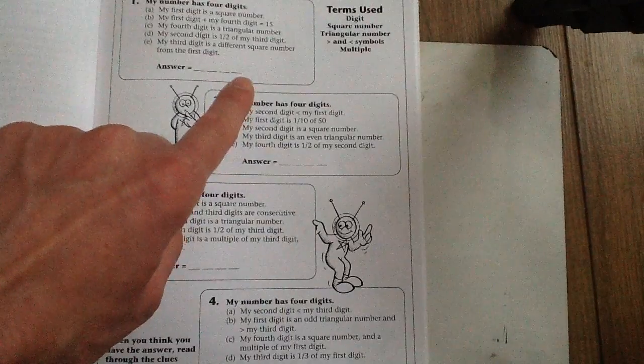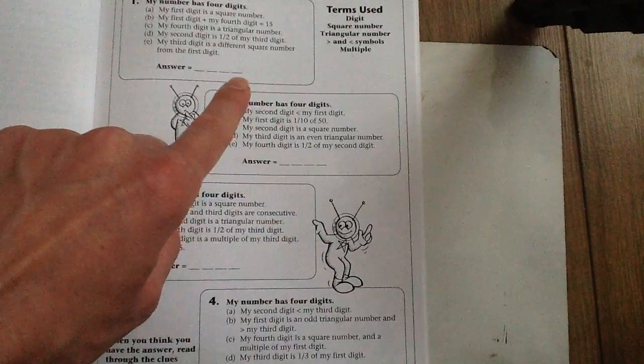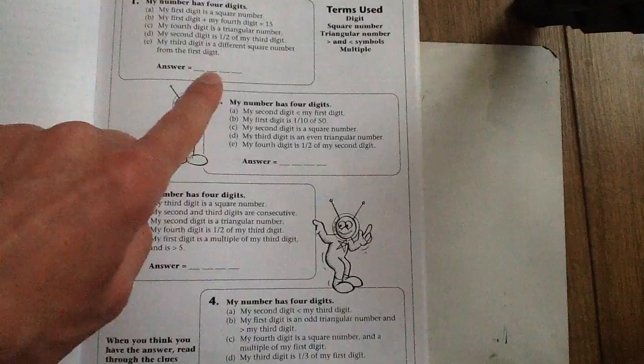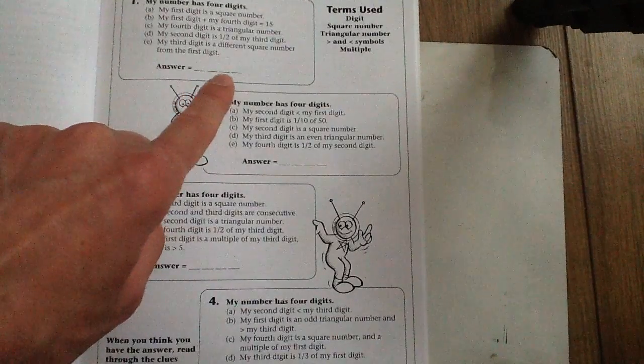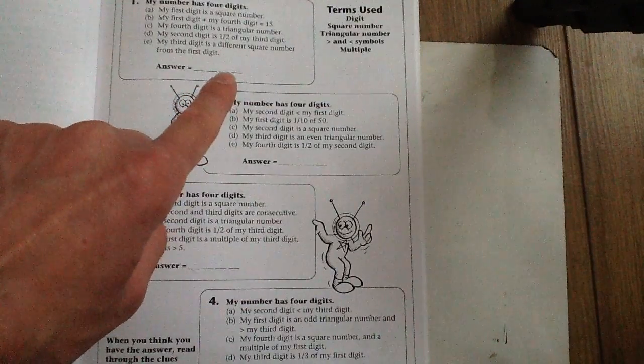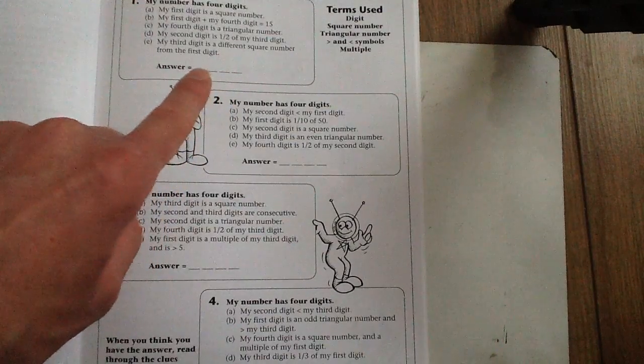My fourth digit is a triangular number. My second digit is half of my third digit, and my third digit is a different square number from the first digit.